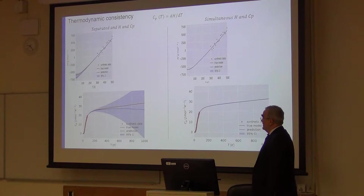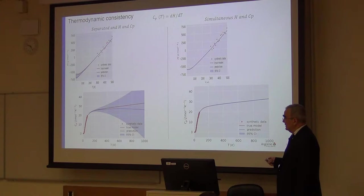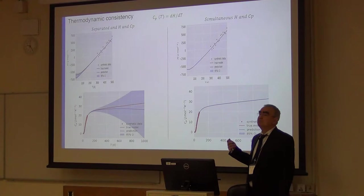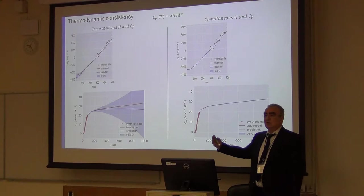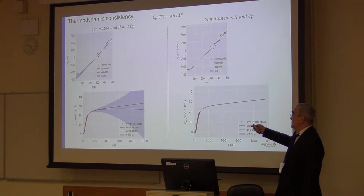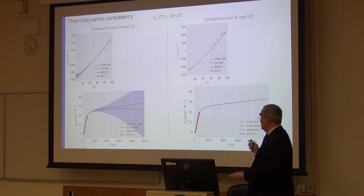One more thing about this computational tool we have developed is thermodynamic consistency. In particular, for this type of problems, the information may come from sources that are not independent. For example, measurements of enthalpy, H is enthalpy, is the heat absorbed or released by the object, are very different from those of the specific heat. You may get information from both of them. However, specific heat is a derivative of enthalpy. So one cannot have models for enthalpy and specific heat that do not satisfy a basic thermodynamic law.